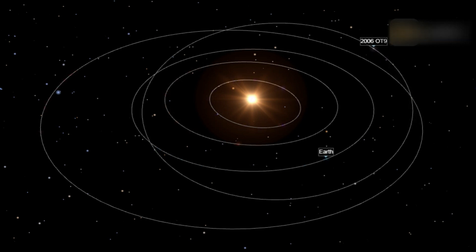Asteroid 2006 OT9, first discovered on July 25, 2006, is an Apollo asteroid. It orbits the Sun every 435 Earth days, or 1.19 Earth years, and moves as far away from the Sun as 199 million kilometers and as close as 138 million kilometers.